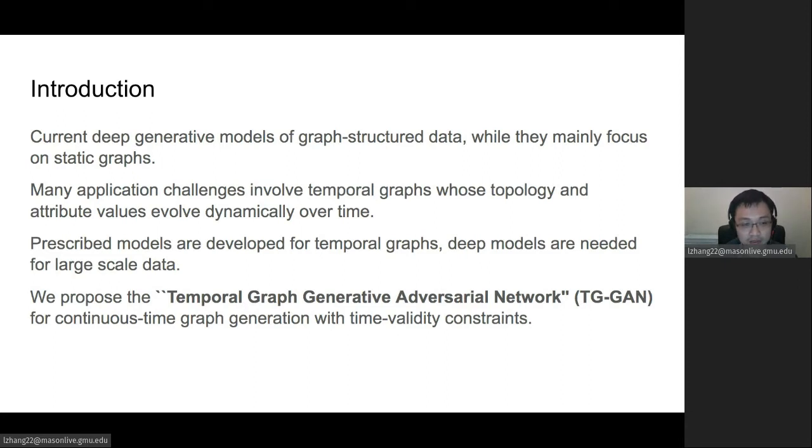However, prescribed models are developed for temporal graphs previously, and deep models are needed for large-scale data. So in this paper, we propose the Temporal Graph Generative Adversarial Network, called TG-GAN, for Continuous Time Graph Generation with Time Validity Constraint.